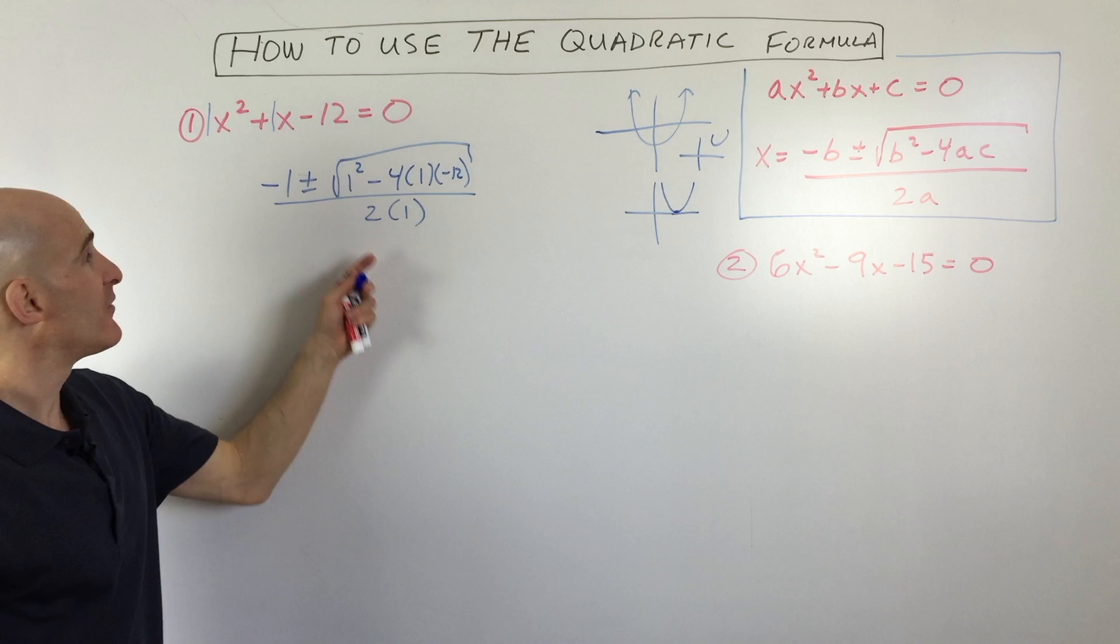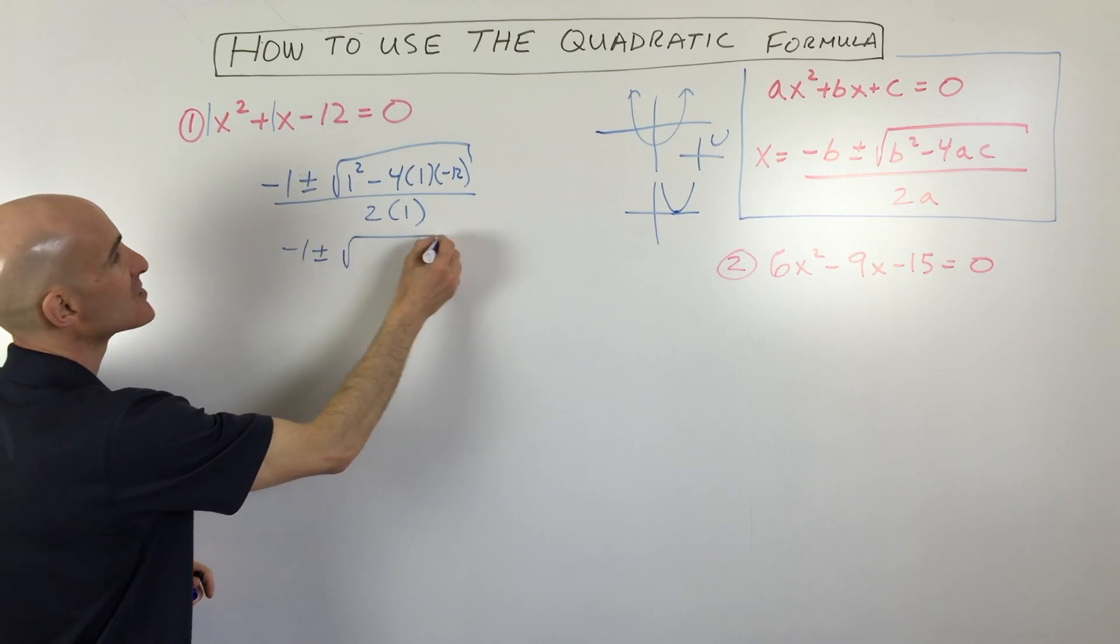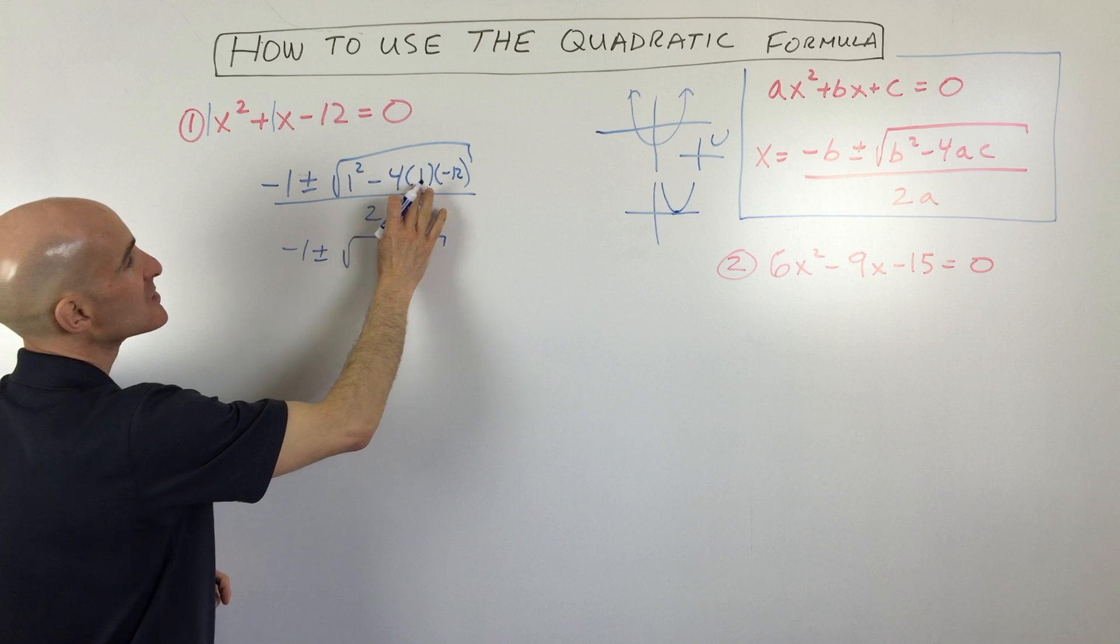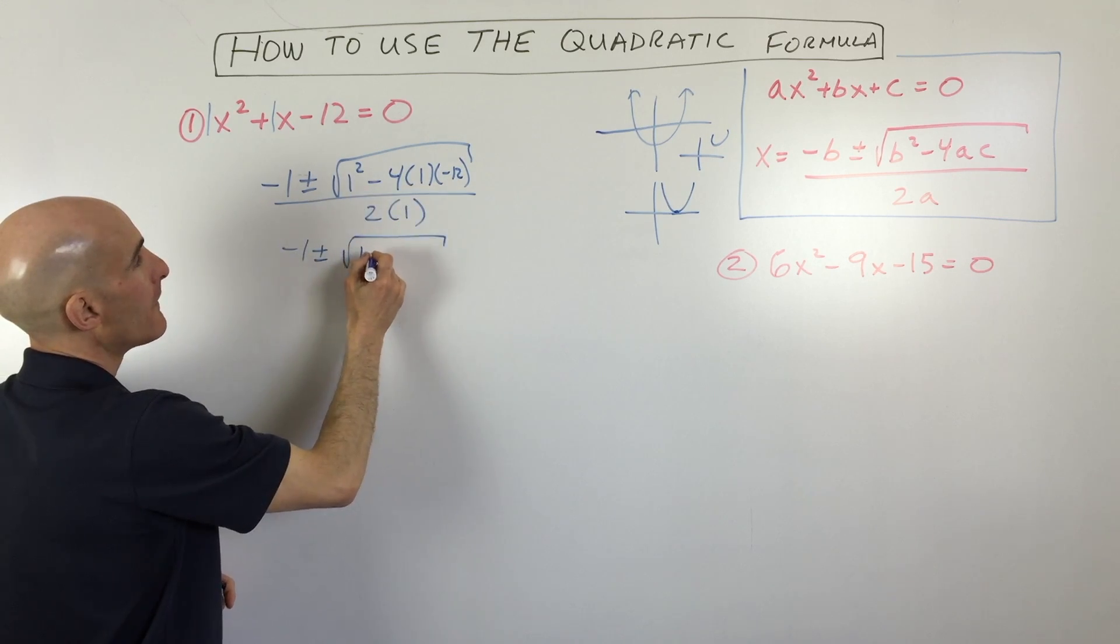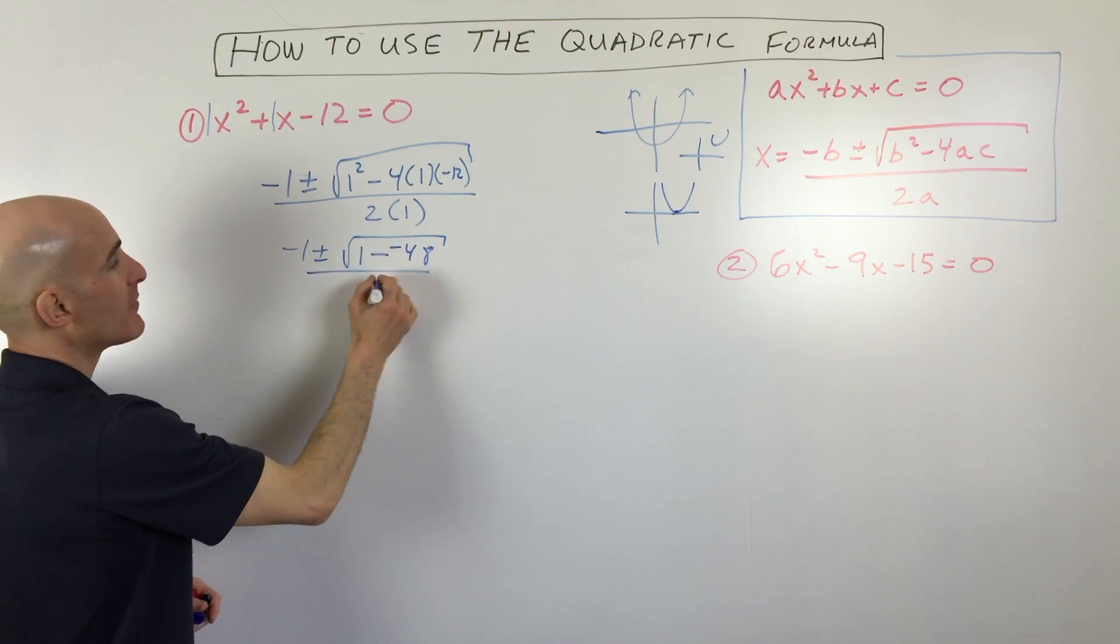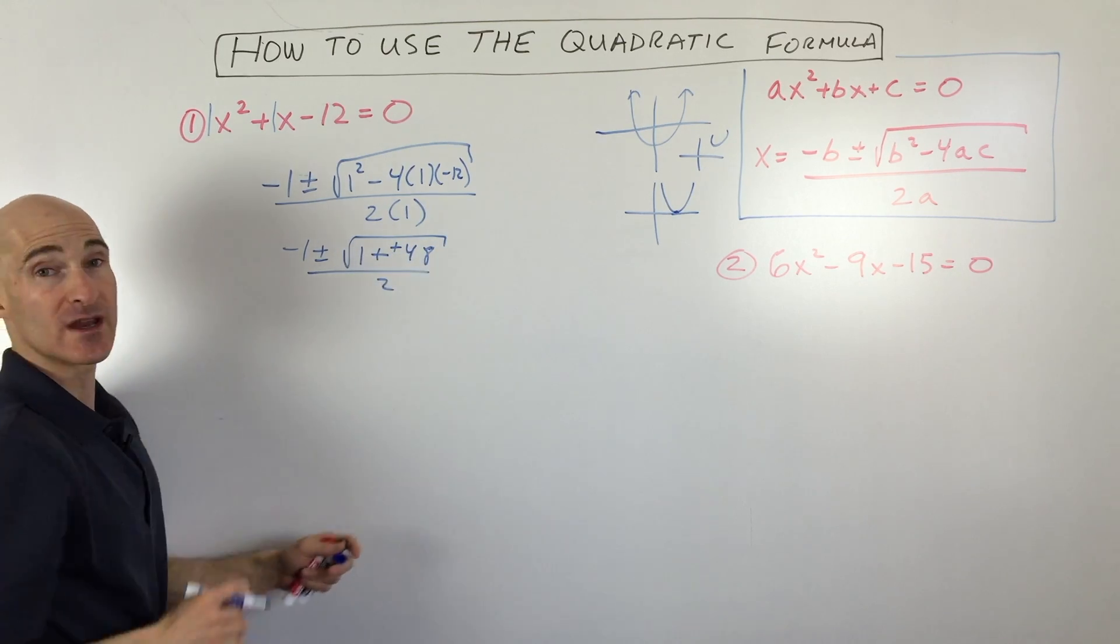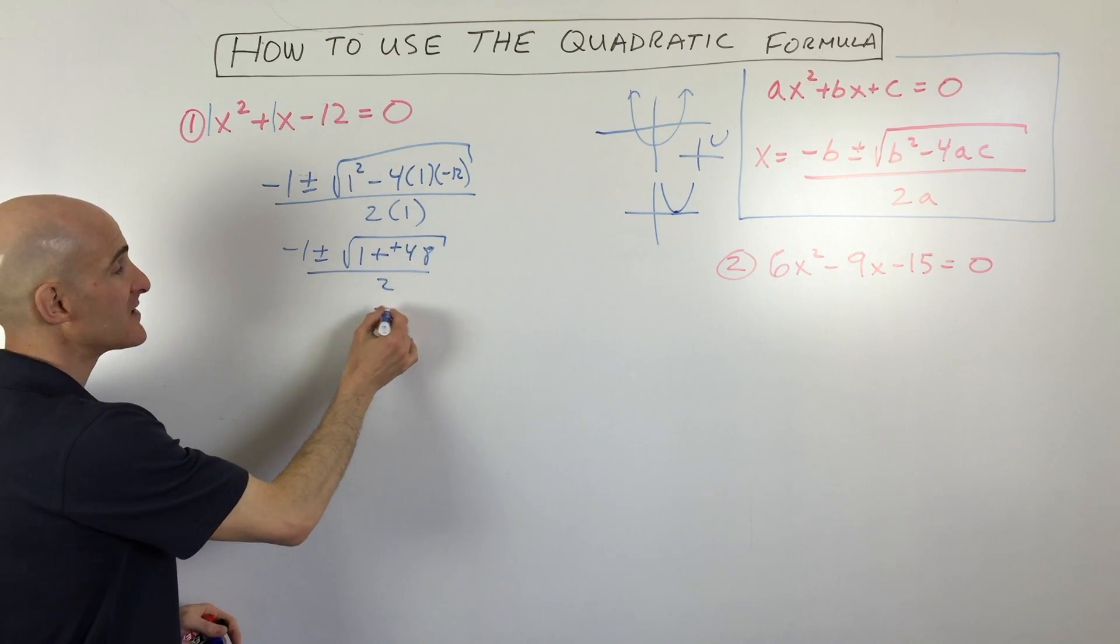So all we have to do now is simplify. So what we have here is negative 1 plus or minus the square root of, let's see, this is going to be 1 minus a negative 48, all divided by 2. Now when you subtract a negative, it's like adding a positive. This becomes 49, and the square root of 49 is 7.